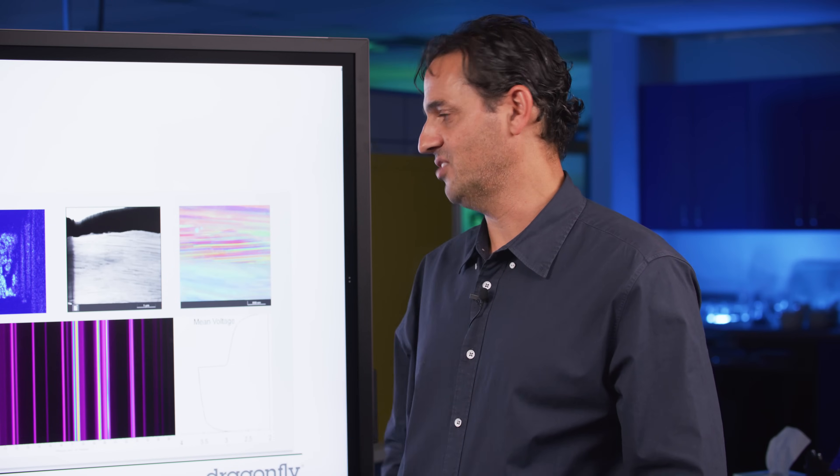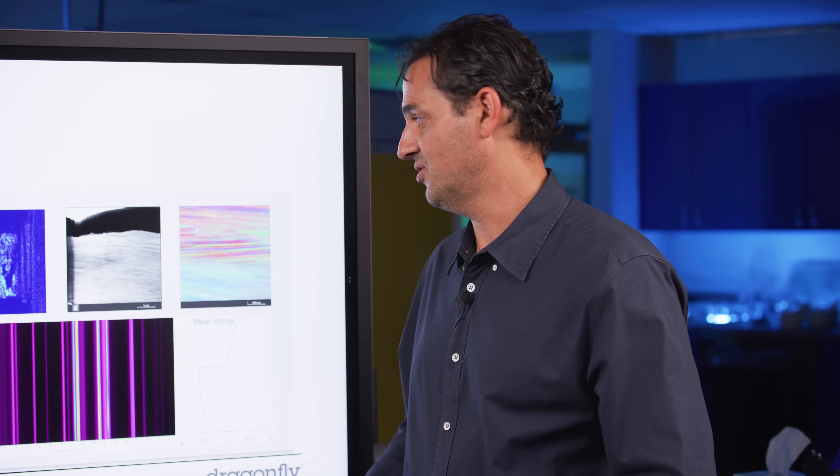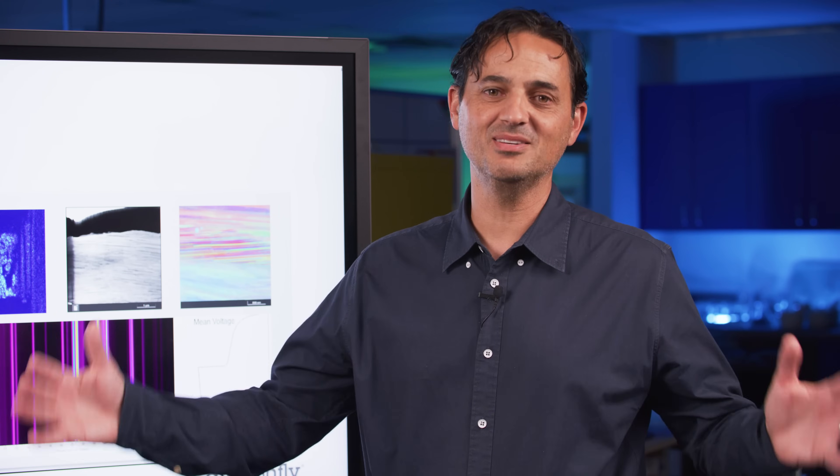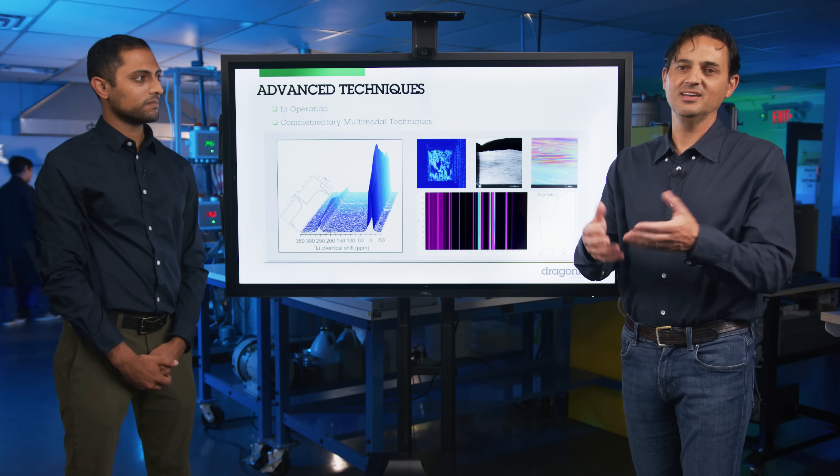And of course, transmission electron microscopy lets you see really at the sub-nanometer level. So we're talking very, very fine scale structure, which you know lithium-ion batteries are, they can be big systems, but ultimately what happens at the nanoscale, the atomic scale, is what matters.